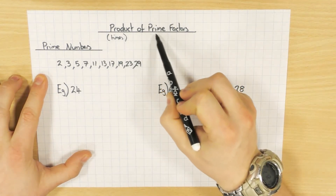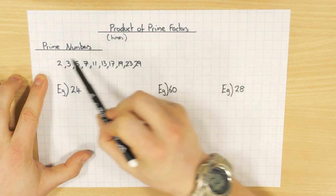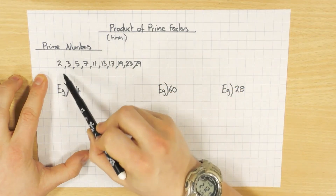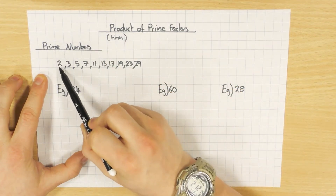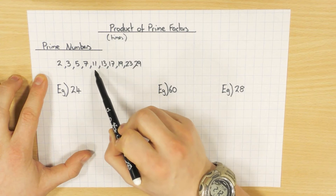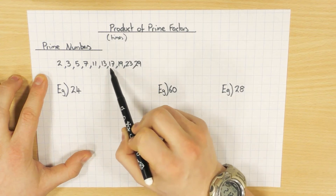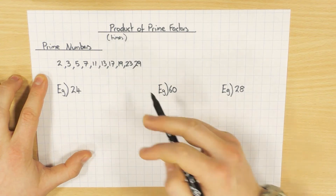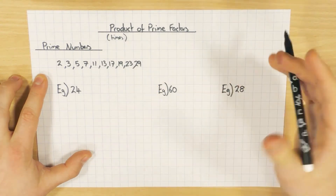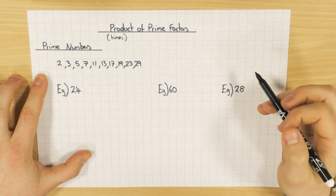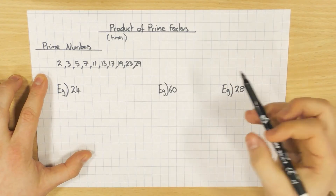Prime numbers — I've written down the first few here. So 2, 3, 5, 7, 11, 13, 17, 19, 23 and 29. Obviously there's more, but we don't need to know all of them for this particular video.